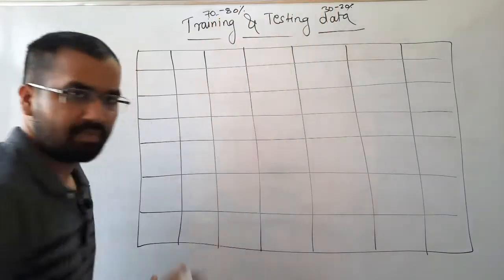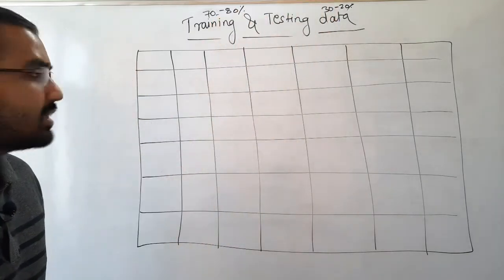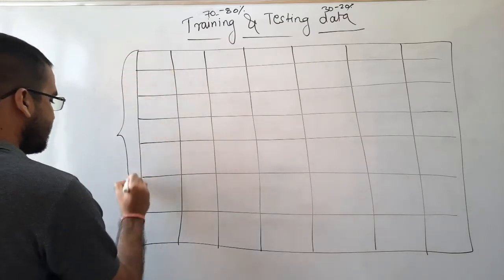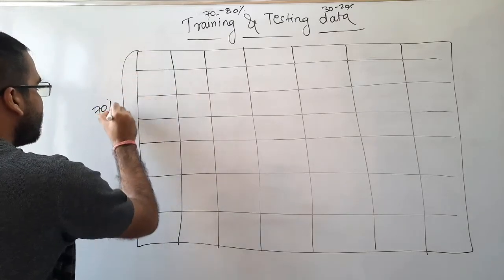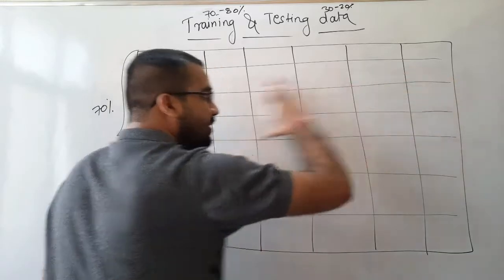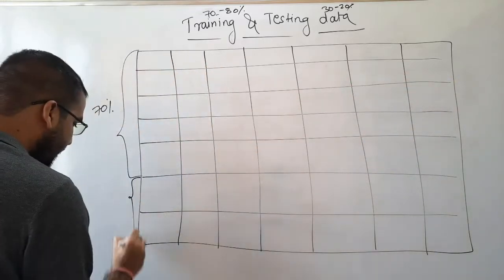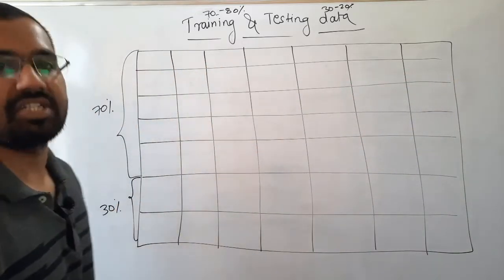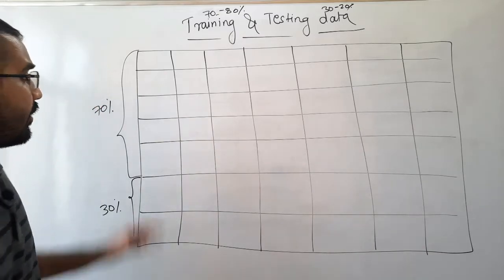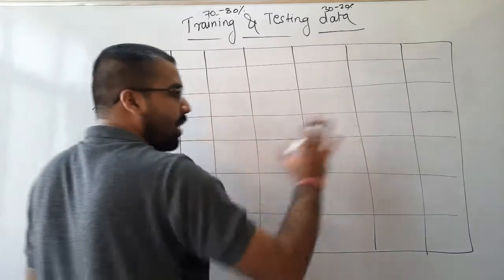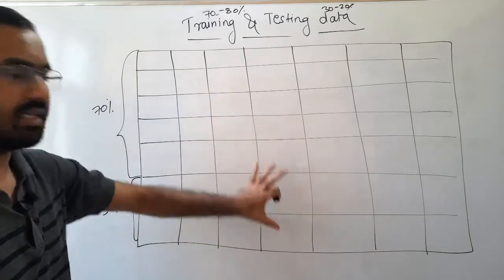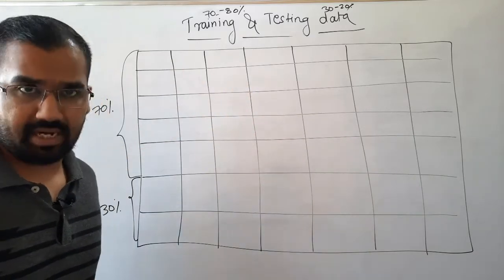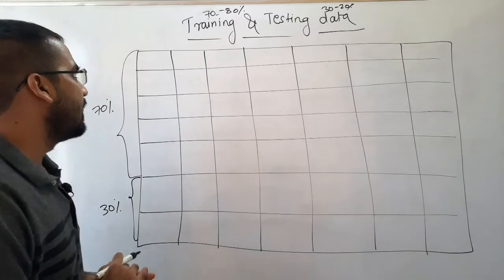Let's go with the 70-30 pattern. So we can see that this 70 percent of our data is considered for training purpose, and this remaining 30 percent is for testing purpose. The data has now been split into training and testing, but there are further details we need to understand.